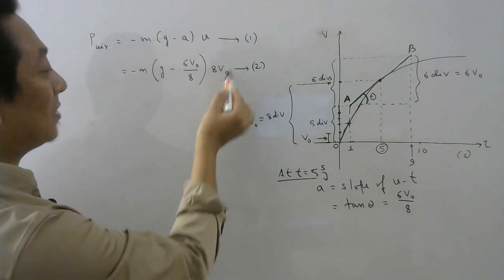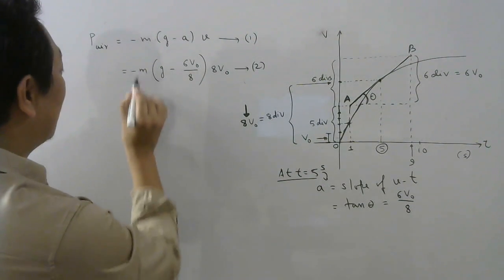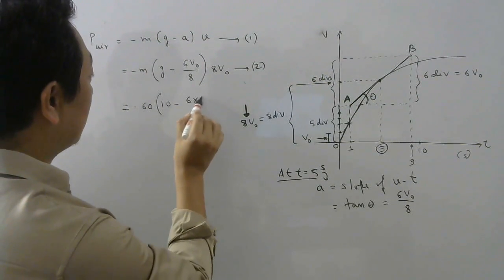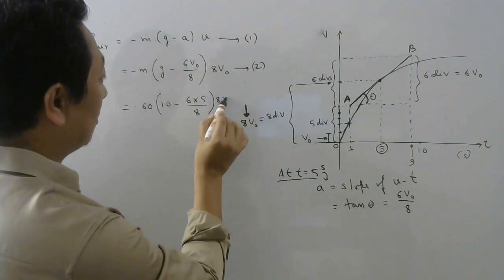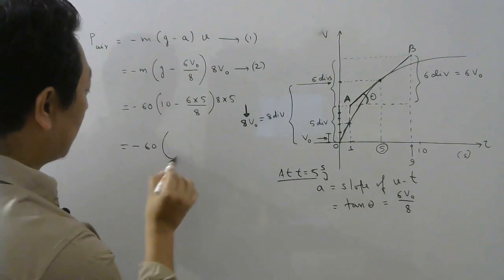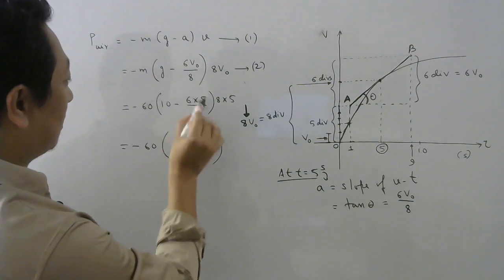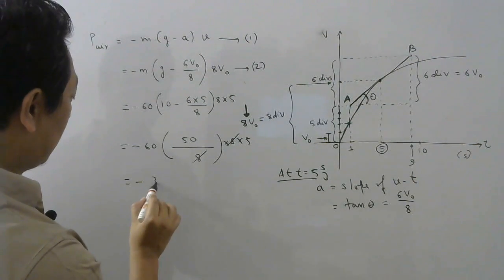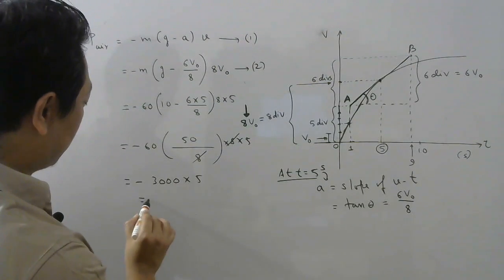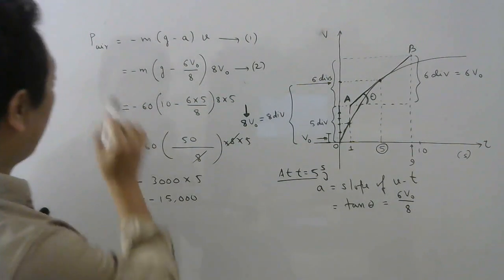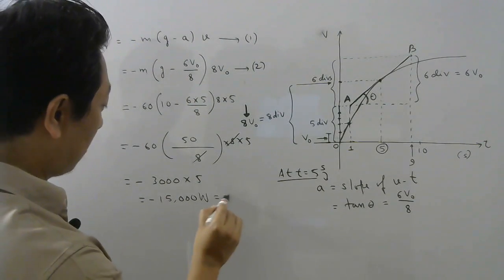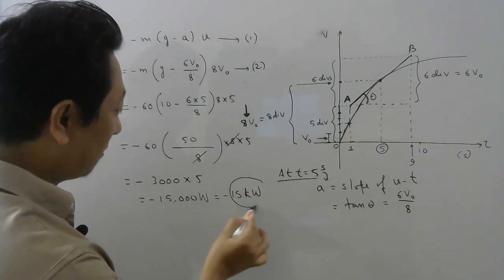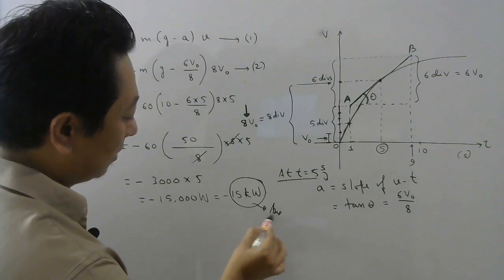Now that Vt equals 5, we substitute: mass is 60 kg, g is 10, acceleration is 6 times 5 divided by 8, and velocity is 8 times 5. Power equals minus 60 times (10 minus 30/8) times 40. Simplifying with LCM 8: this becomes minus 60 times (80 minus 30)/8 times 40 = minus 60 times 50/8 times 40, giving minus 3000 times 5 equals minus 15,000 watts, which is minus 15 kilowatts. The magnitude of the power is 15 kilowatts.